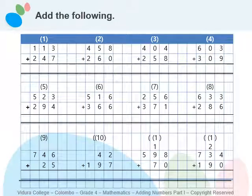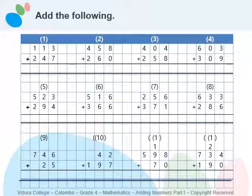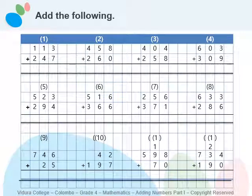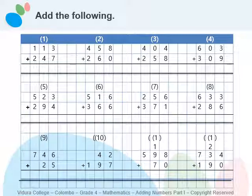Today you have learned how to add numbers from units to tens and add numbers by carrying over from tens to hundreds. Now you can see there are twelve sums. Copy them into your math writing book and find the answers. Pause the video, do the activity, then play the video again to check your answers.